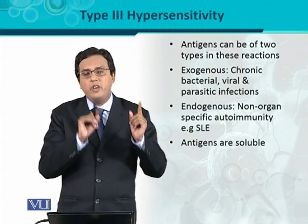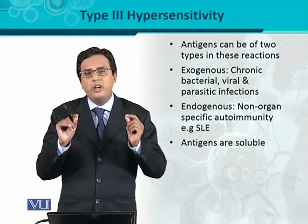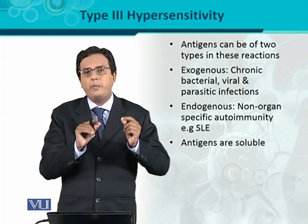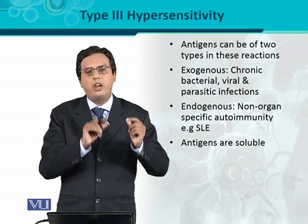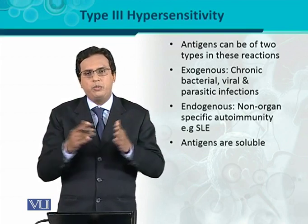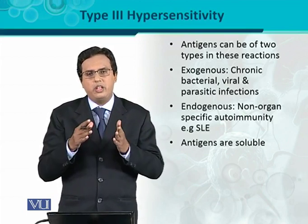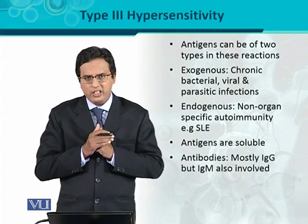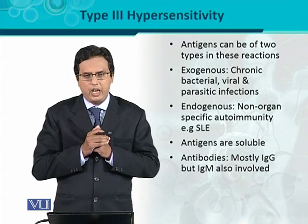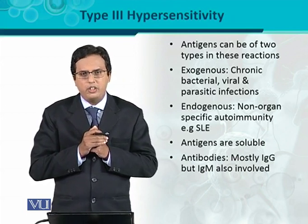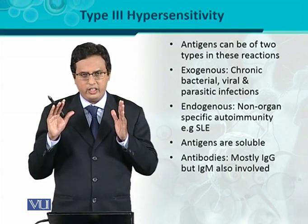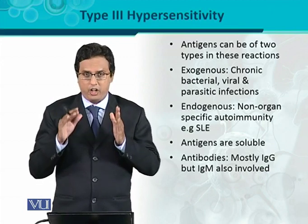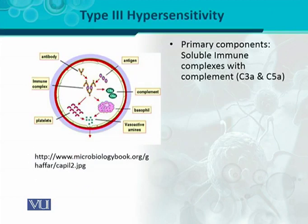In contrast to type 2, where antigens are not soluble but fixed and present on the surface of certain cells such as RBCs or other tissue cells, in type 3 the antigens are soluble. The antibodies involved are mostly of the IgG class, though IgM antibodies are also involved in these reactions.